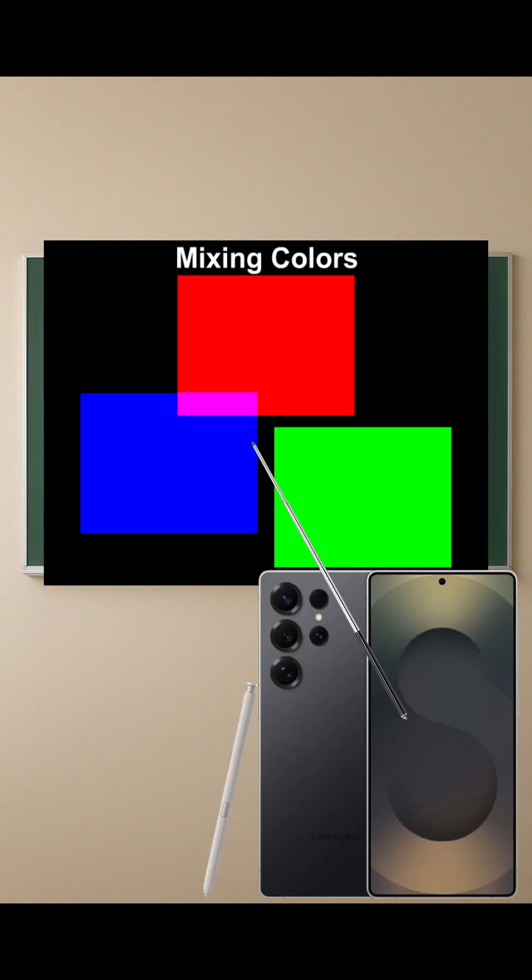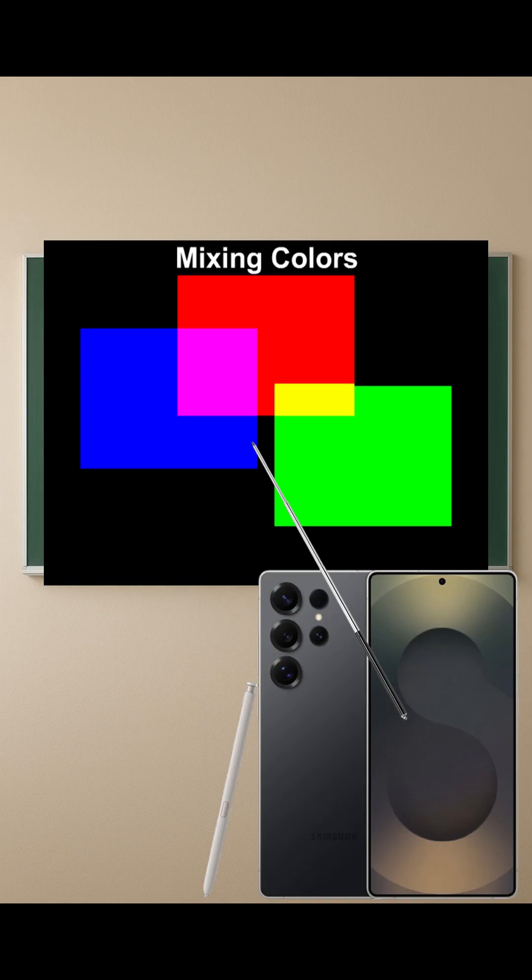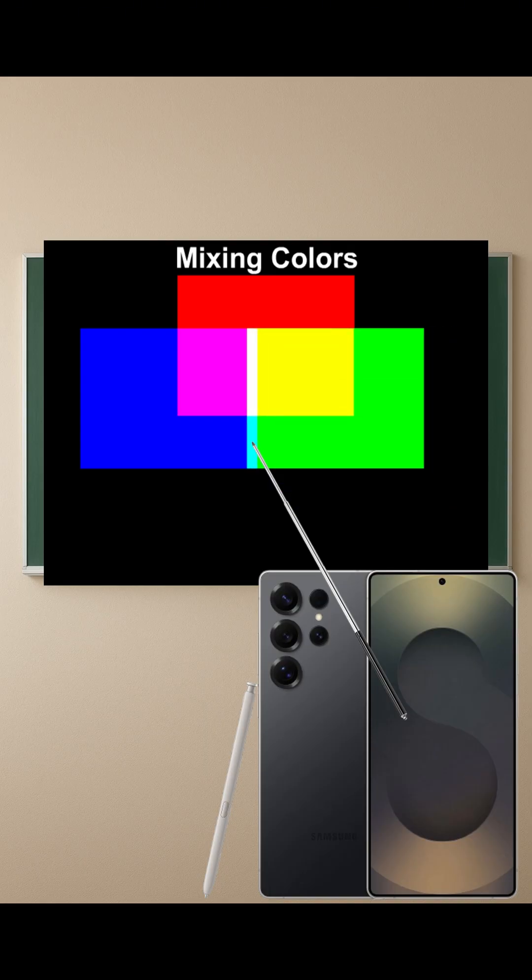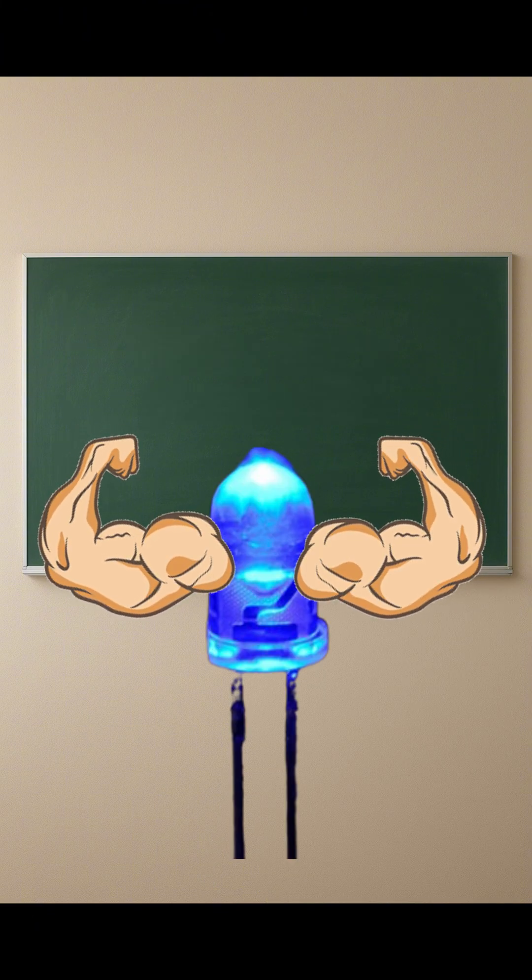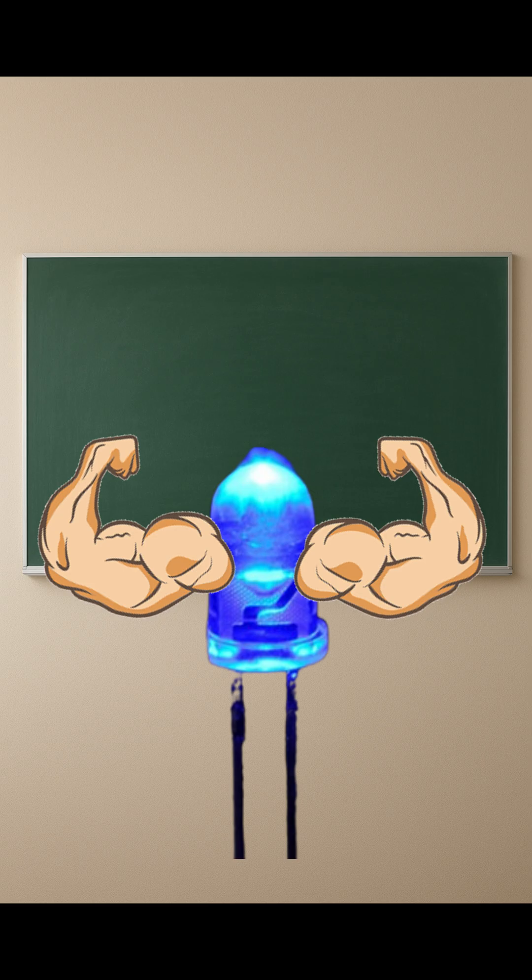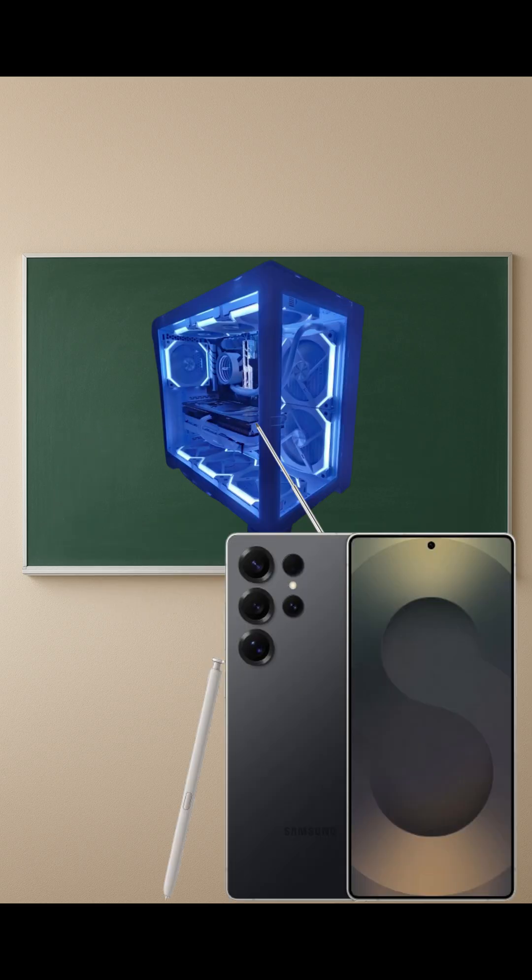Most RGB fans use RGB LEDs, which means they only mix red, green, and blue light. But white light isn't made perfectly by combining those three. It often leans blue because blue LEDs are the brightest and most dominant wavelength. So instead of a clean daylight white, you get this cold, icy tint that looks kind of sus.